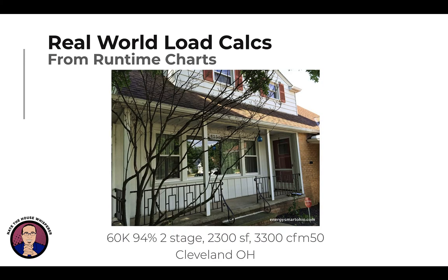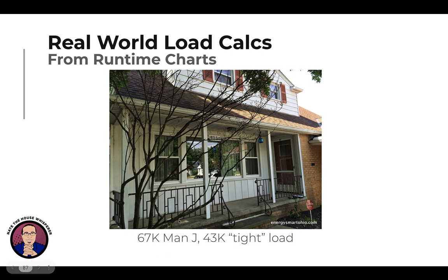Now let's look at a formerly leaky house — one of the first projects using what became the HVAC 2.0 CPP, the Comprehensive Planning Process. We didn't touch HVAC; this was all shell work. It had a 60,000 BTU 94% efficient two-stage furnace, 2,300 square feet, ending up at 3,300 CFM50 blower door after starting at about 6,000. The Man-J came in at 67,000 BTUs. Out of the TREAT program — used by New York State, very close to Man-J — pulling out fudge factors gives you a 'tight load' of 43,000 BTUs. But let's see what actually happened.